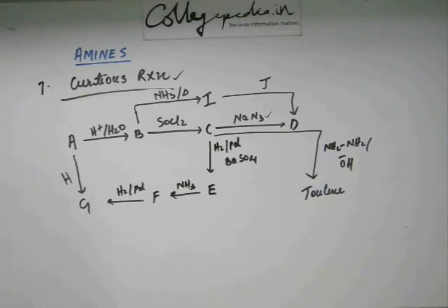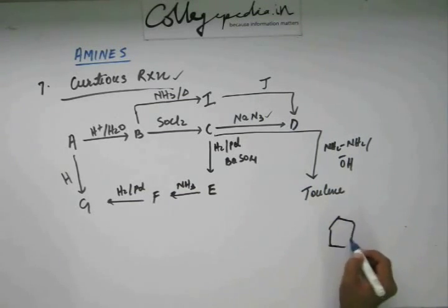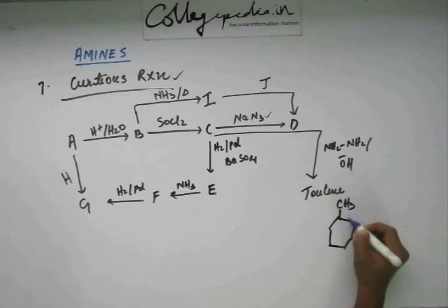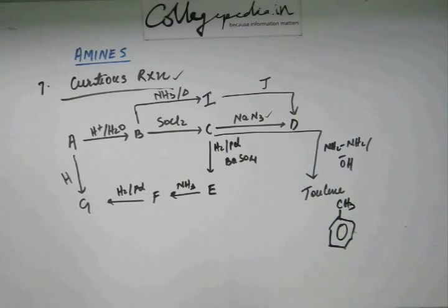So, assuming that you have solved it, let's start the discussion. Toluene. First thing is you have to know what toluene is and I know that you know what toluene is. Toluene is this methyl group sitting at the top of benzene ring. This is toluene you are getting.